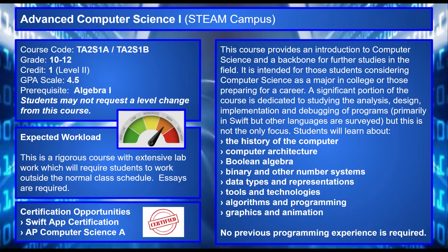This course has a GPA scale of 4.5 and the prerequisite of algebra 1. Students may not request a level change. If students want to go above and beyond, this course also offers the opportunity for professional Swift App certification and preparation for the AP Computer Science A exam.